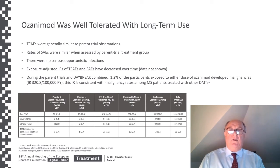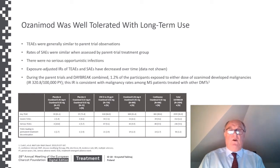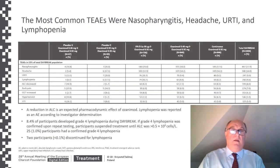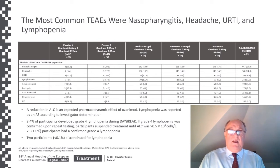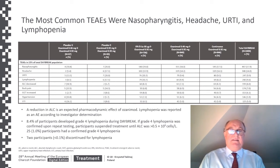Ozanimod was well tolerated with long-term use. Treatment-related adverse events were generally similar to parent trial observations, and rates for serious adverse events were similar when assessed by parent trial treatment group. There were no serious opportunistic infections. Importantly, only 1.2% of patients exposed to either dose of Ozanimod developed malignancies, which was within the expected range for the MS population. The most common treatment-related adverse events were nasopharyngitis, upper respiratory tract infections, and lymphopenia. Lymphopenia was expected because of the mechanism of action of Ozanimod, and the level of lymphopenia was consistent across all parent treatment groups at approximately 10%. Twenty-five patients had confirmed grade 4 lymphopenia, but only two participants discontinued due to lymphopenia.